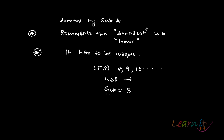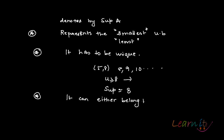So sup must be 8. This is what it means that it has to be unique — it will be a unique number. Another important thing is that the sup might belong to the set or it might not. In this example, I have taken the open interval (5, 8) and 8 is the supremum, but 8 does not belong to the open set. So the supremum can either belong to A or maybe not.